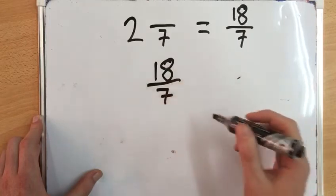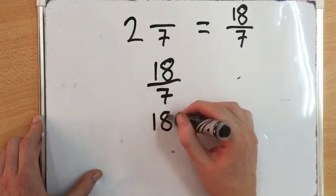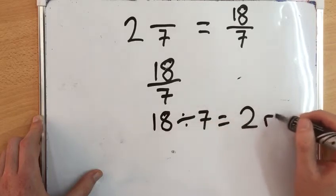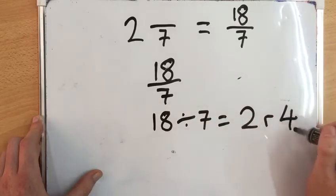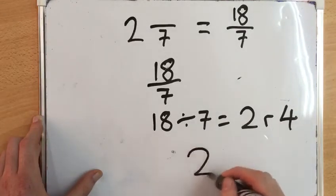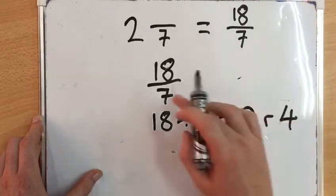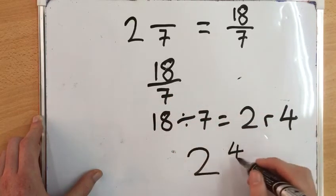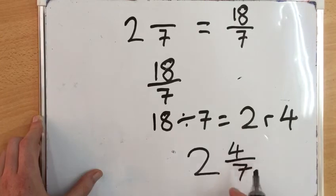We go 18/7. We go 18 divided by 7 equals 2 remainder 4. Again, we write down our whole number, then we put our remainder over our denominator. So that becomes 2 and 4/7.